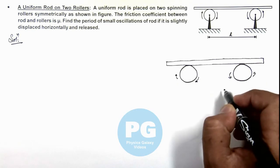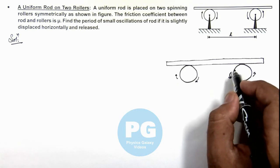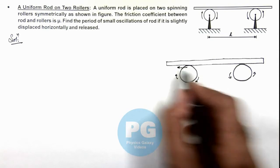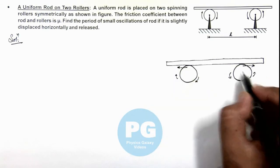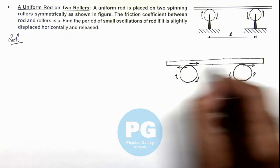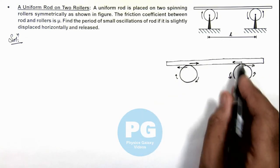So the direction in which friction would be acting on rollers would be opposite to their spinning direction, and on rod it'll be in the direction opposite to the friction acting on the rollers.